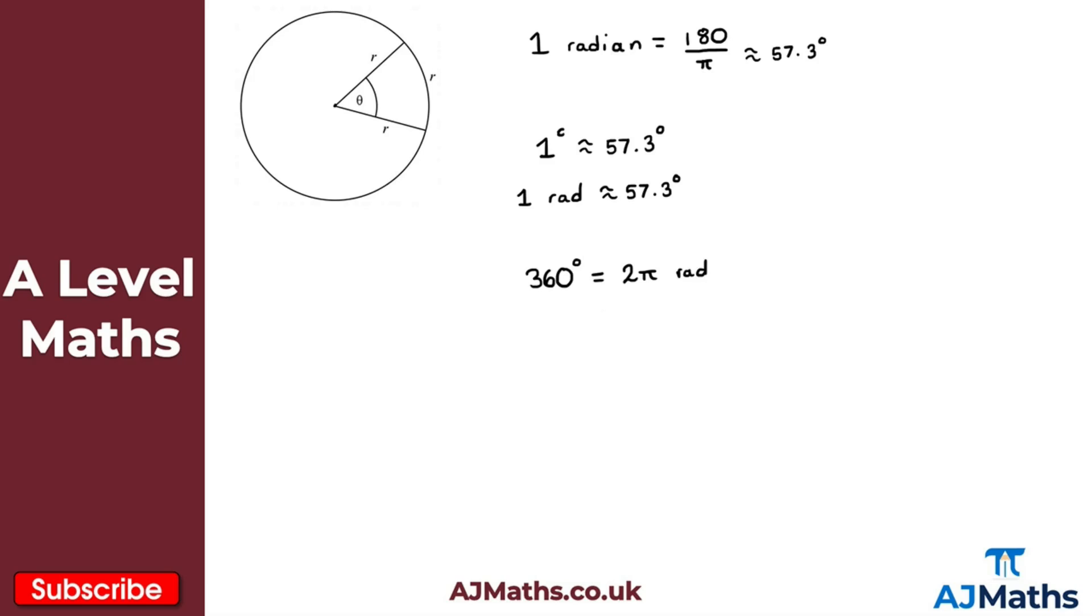So from here then, for example if I want 180 degrees in terms of radians, I just divide both sides here by 2. That would give me 180 degrees, and then if I divide 2π here by 2 we simply get π radians.